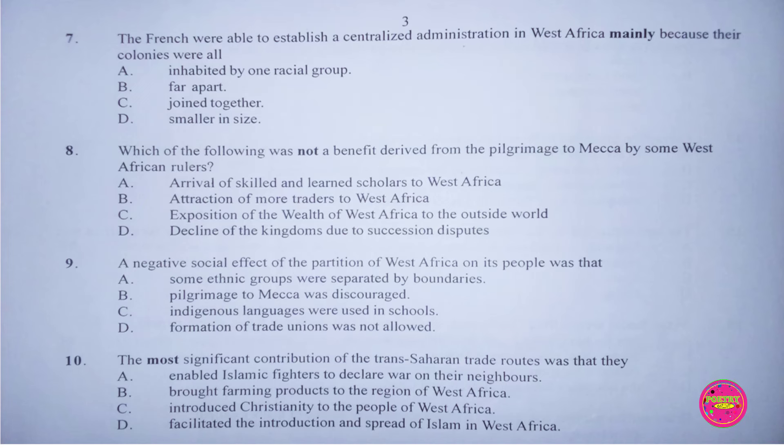Question 8. Which of the following was not a benefit derived from the pilgrimage to Mecca by some West African rulers? A. Arrival of skilled and learned scholars to West Africa, B. Attraction of more traders to West Africa, C. Exposition of the wealth of West Africa to the outside world, D. Decline of the kingdoms due to succession disputes. The correct answer is D. Decline of the kingdoms due to succession disputes.